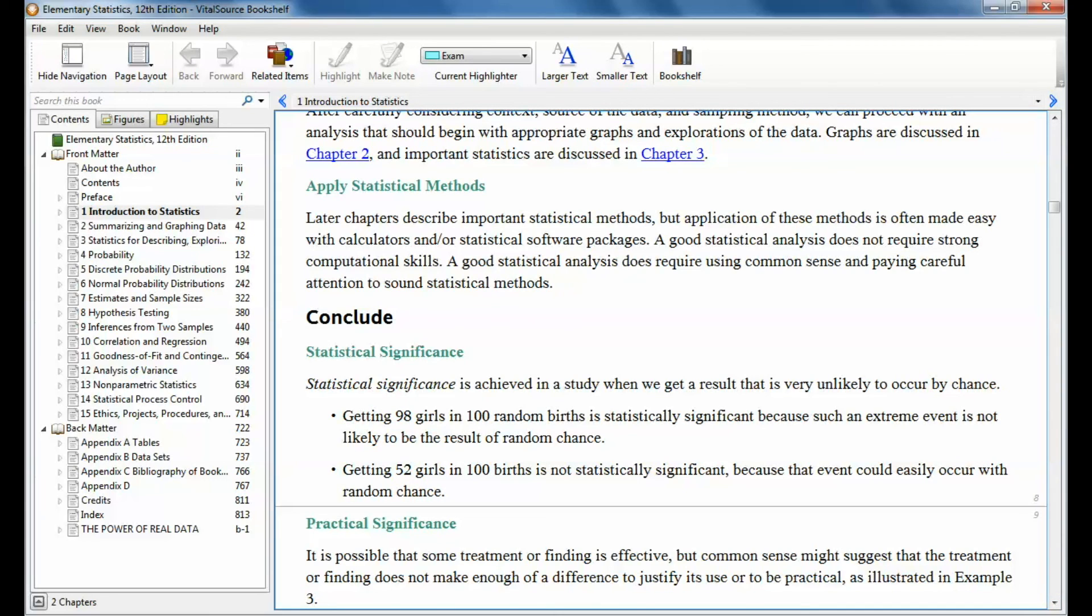Conclude. Statistical significance is achieved in a study when we get a result that is very unlikely to occur by chance. A lot of problems that we work in here are related to the birth of children, whether it be male or female. Here's an example of something that is really not going to happen by chance. Getting 98 girls in 100 random births. That is statistically significant because such an extreme event is not likely to be the result of random chance. Getting 52 girls in 100 births, that's not statistically significant because that event could easily occur with random chance.